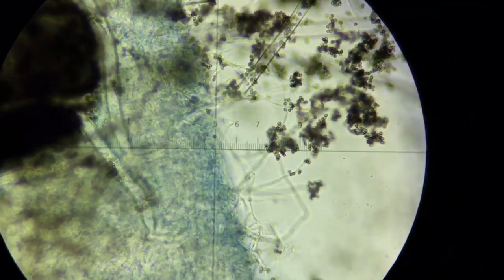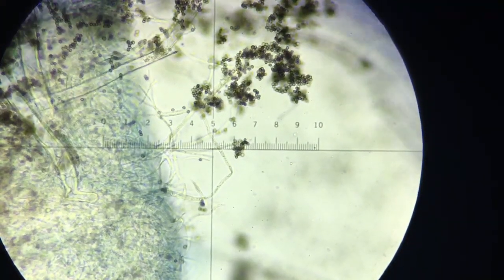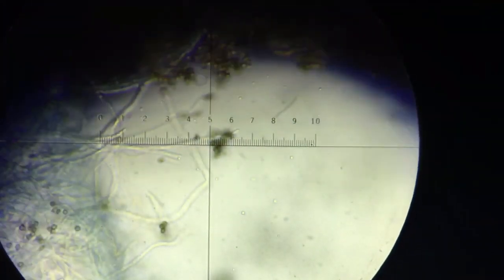So now let's go to 40x and look at some of the other structures. I had a hard time getting a good example of septation, but this is the other really important thing that distinguishes the zygomycetes from the other fungi.